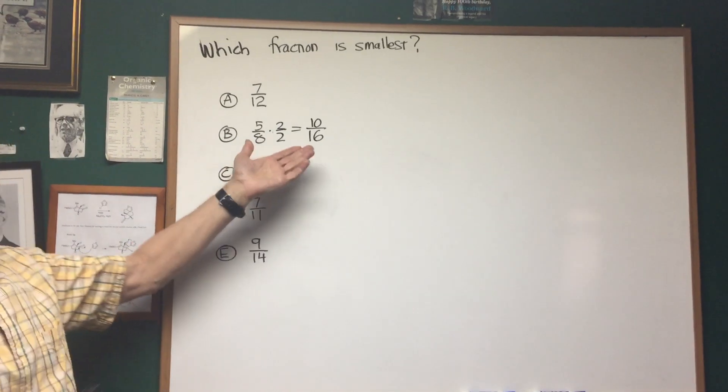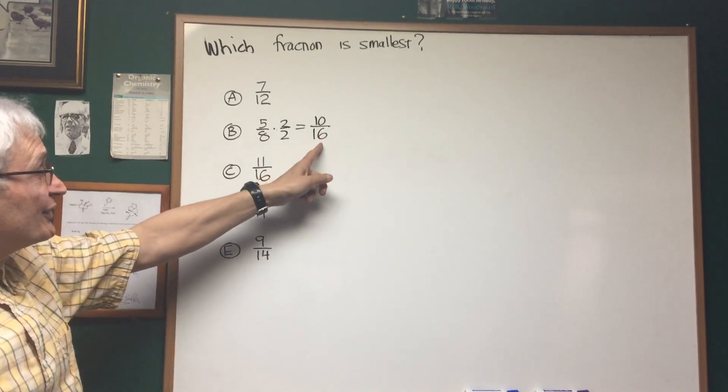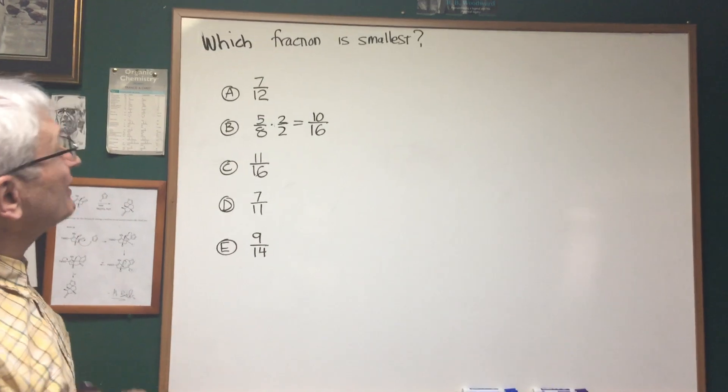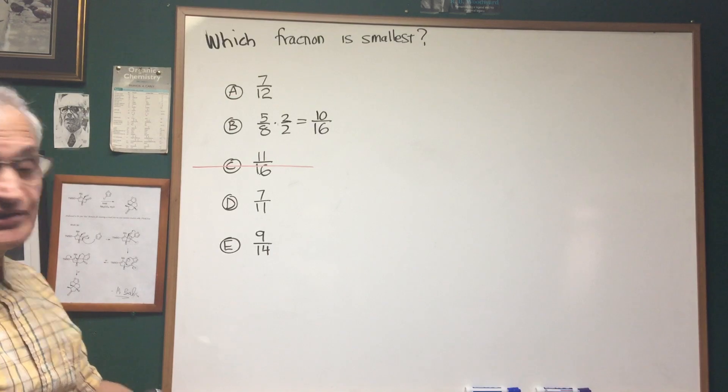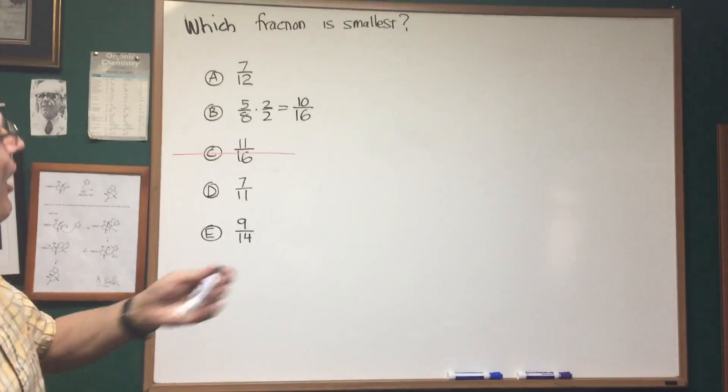Now that's easy to compare with 11 over 16. 10 over 16 is smaller. So that means if we're looking for the smallest, we can eliminate choice C, because that's larger than 10 sixteenths.